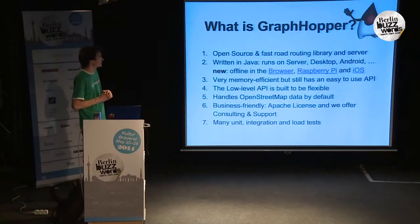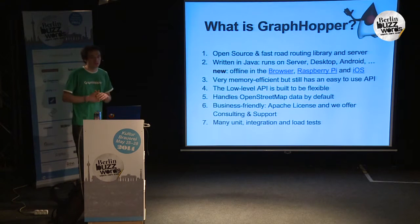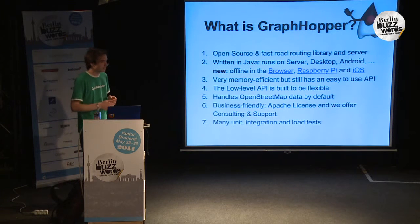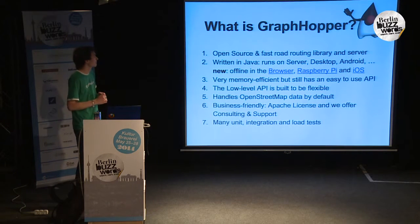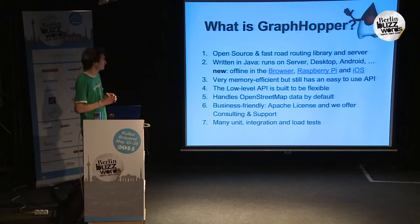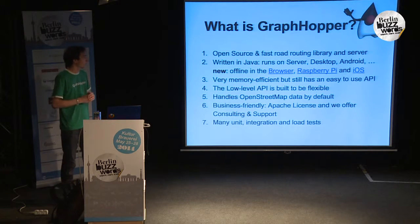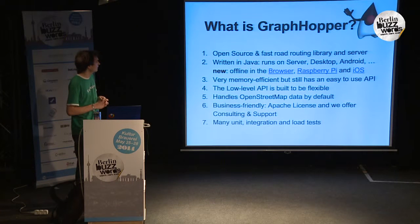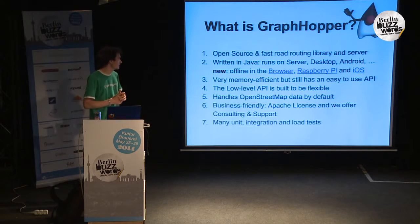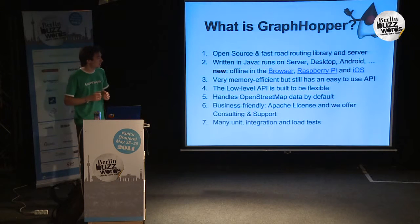GraphHopper is an open source and fast road routing library and server. You can embed it into your products or use it as a black box routing service. It is completely written in Java. It runs on the server, on the desktop, on Android through normal JVM. There are also some experiments with JVM in the browser, so we can run it offline in the browser.